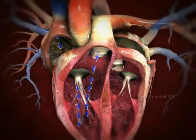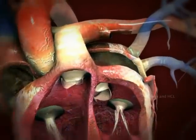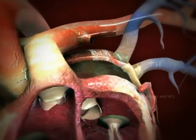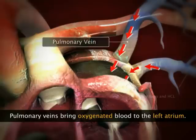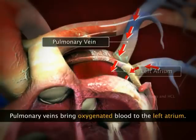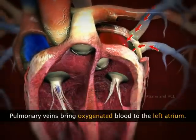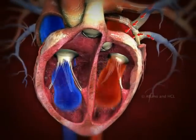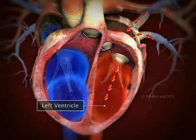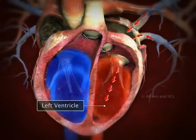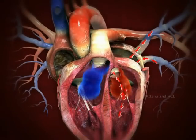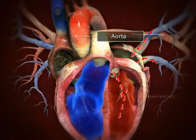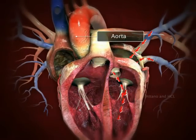On the left side, the pulmonary veins bring oxygenated blood from the lungs into the left atrium. This oxygenated blood enters the left ventricle via the bicuspid valve, and is then pumped to the aorta, which supplies it to various parts of the body.